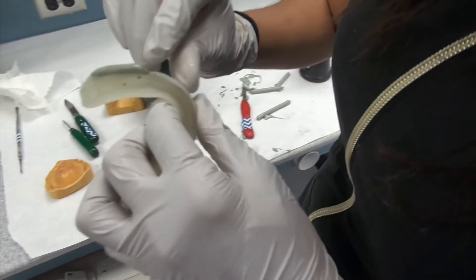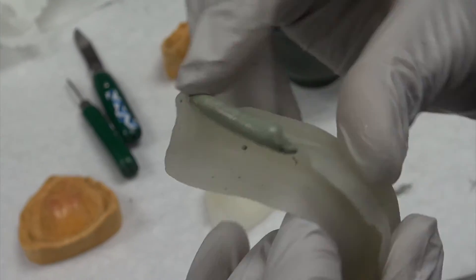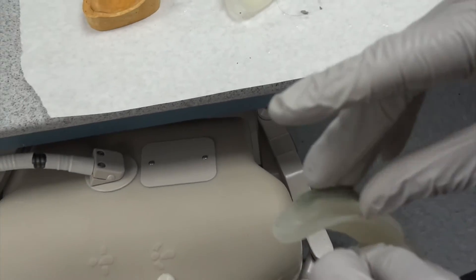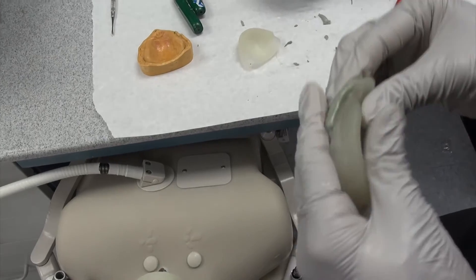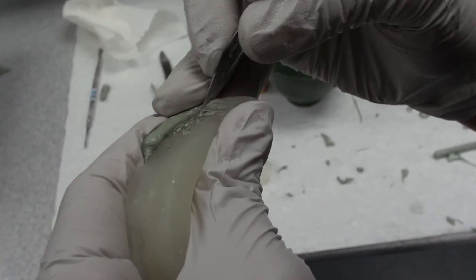So, see how after several tries, it's starting to become a lot smoother of a finish? And you can see that most of that clumpy mass has come off.